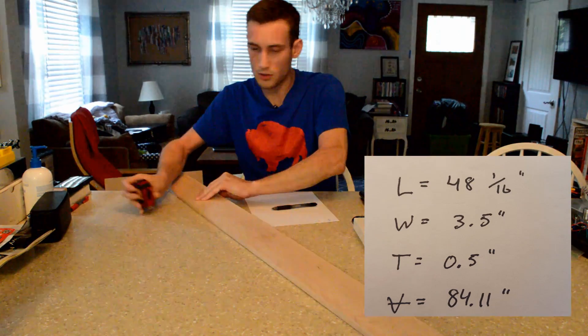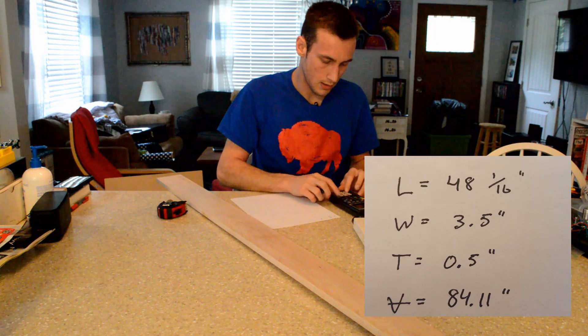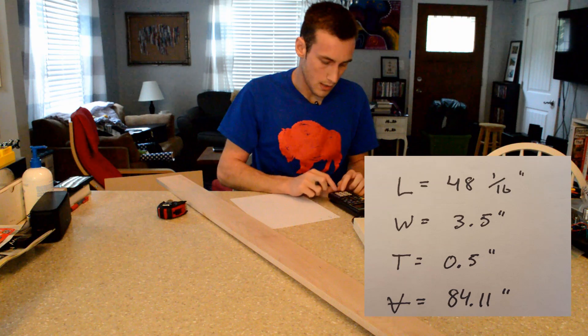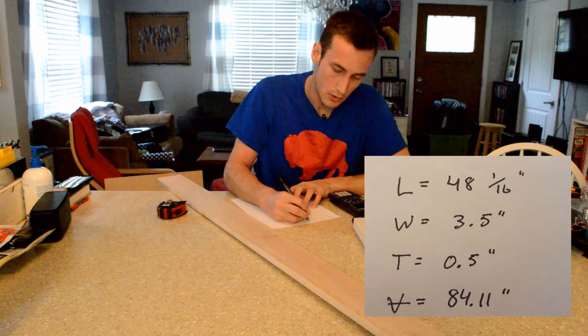The thickness is half an inch. So we have the volume is going to be equal to 48 and 1/16 times 3.5 inches times 0.5 inches, which gives us 84.11 inches cubed.